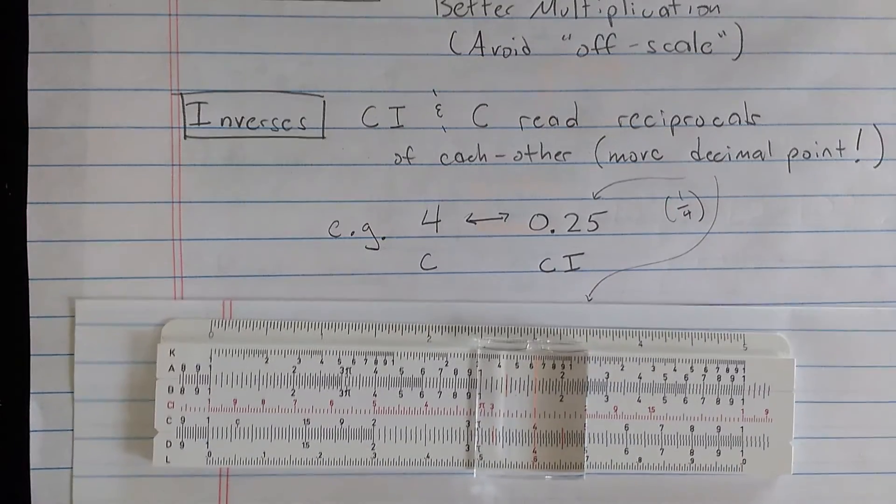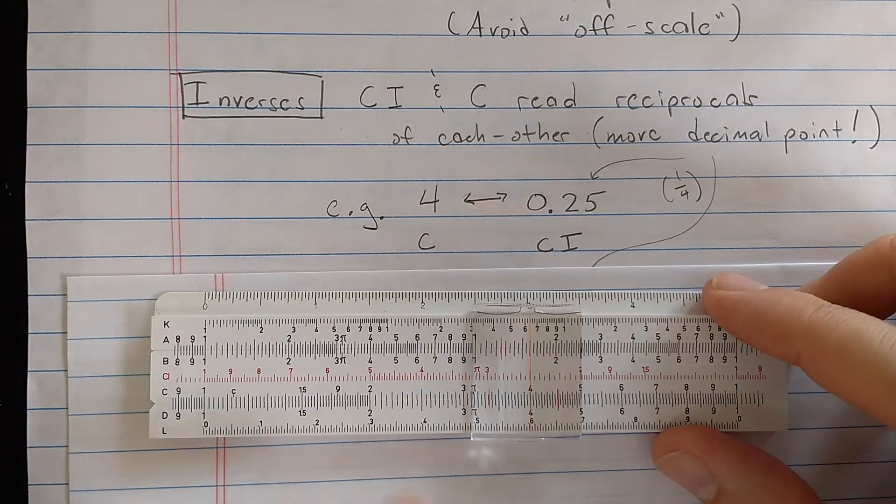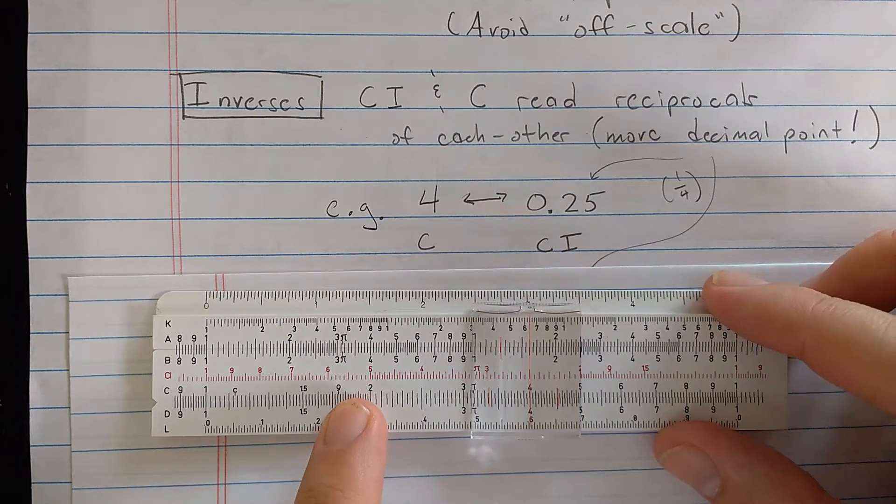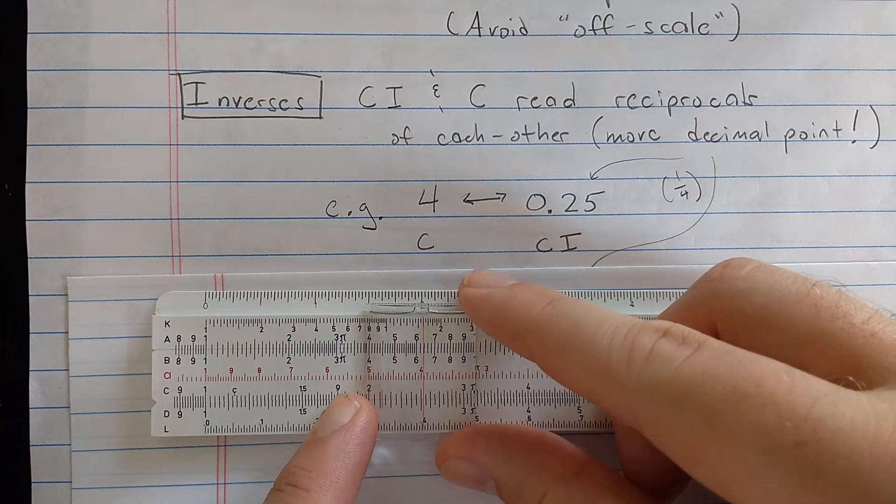Another example. So you see I had 4 on the C scale, 2.5 on the CI scale. You also see, if you were to find 4 on the CI scale,